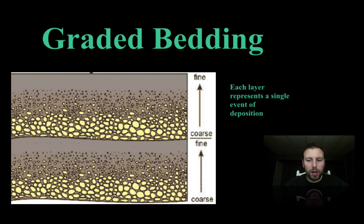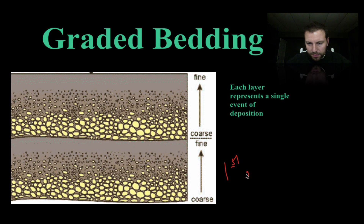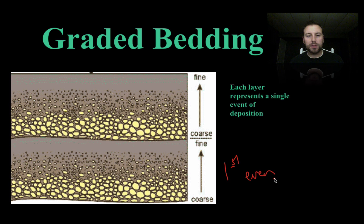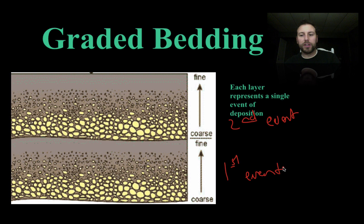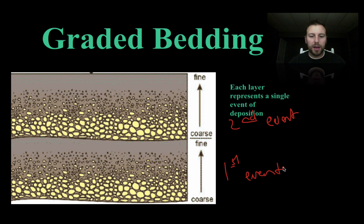When there are multiple events of vertical sorting deposition, it's known as graded bedding. For example, a heavy rainstorm brings sediment down; as the rain slows, the water deposits material. Then another large rainstorm — a second event — occurs, picking up velocity again before depositing more material. Graded bedding occurs over periods of time with repeated cycles of high water followed by slowing, depositing materials in distinct layers.